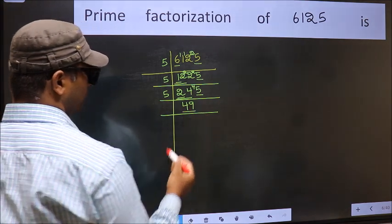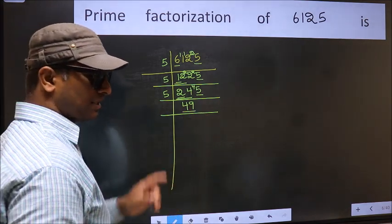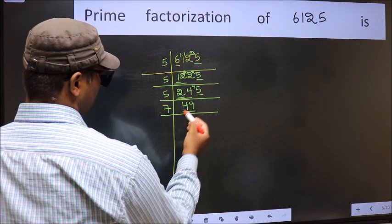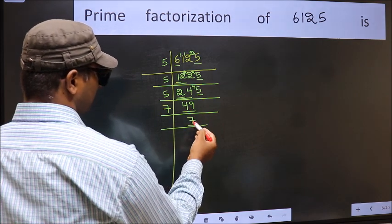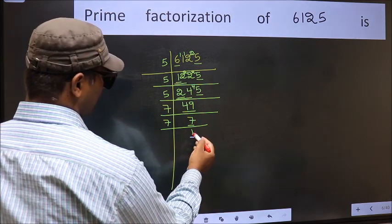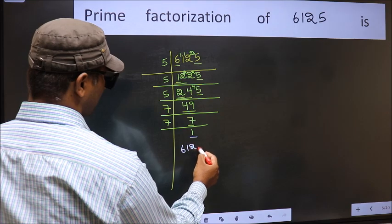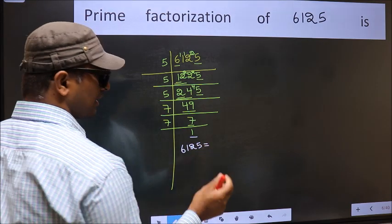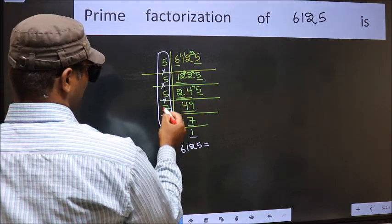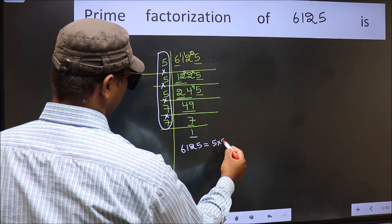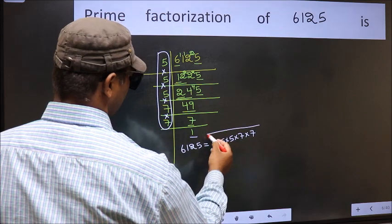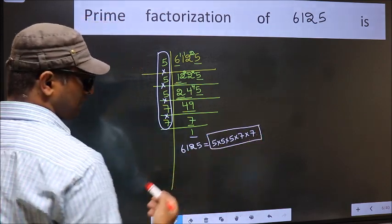Now here we have 49. Always remember: 7 times 7 is 49. So we divide by 7 — 7 once is 7, and we get 1 here. So the prime factorization of 6125 is the product of these numbers: 5 × 5 × 5 × 5 × 7 × 7. This is the prime factorization of 6125.